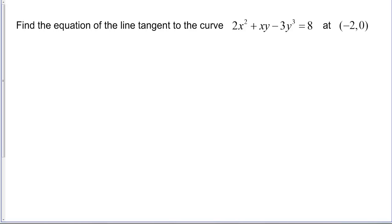Let's do a problem in which we have to use implicit differentiation to find the equation of a tangent line. The directions say to find the equation of the line tangent to the curve 2x squared plus xy minus 3y cubed equals 8 at the point negative 2, 0.